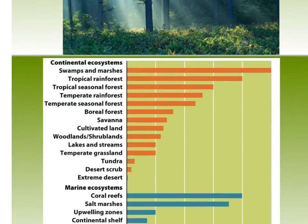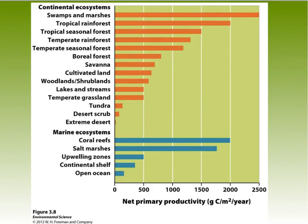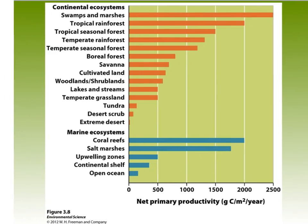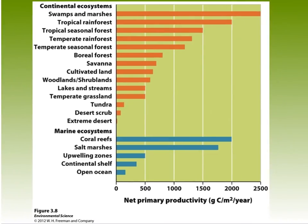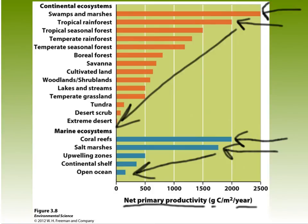You can pause here and look at that calculation again — it's important. This next diagram shows different ecosystems around the globe and their net primary productivity in grams per year. We have very productive ecosystems like swamps, marshes, and tropical rainforests, then it goes down to deserts which are not very productive. We also have marine ecosystems like coral reefs that are very productive, all the way down to very little productivity in the open ocean.